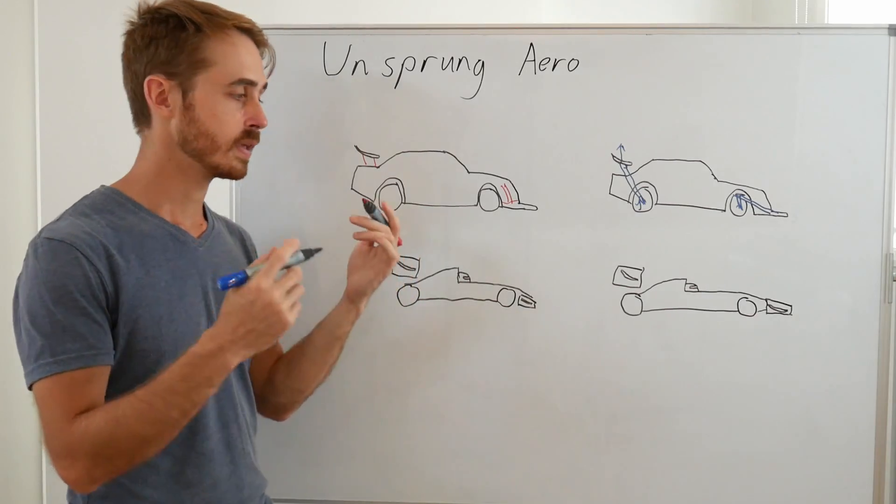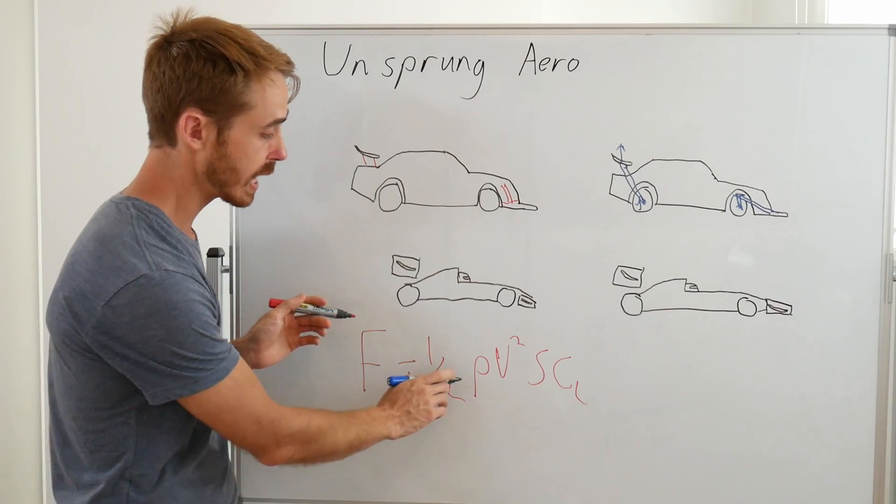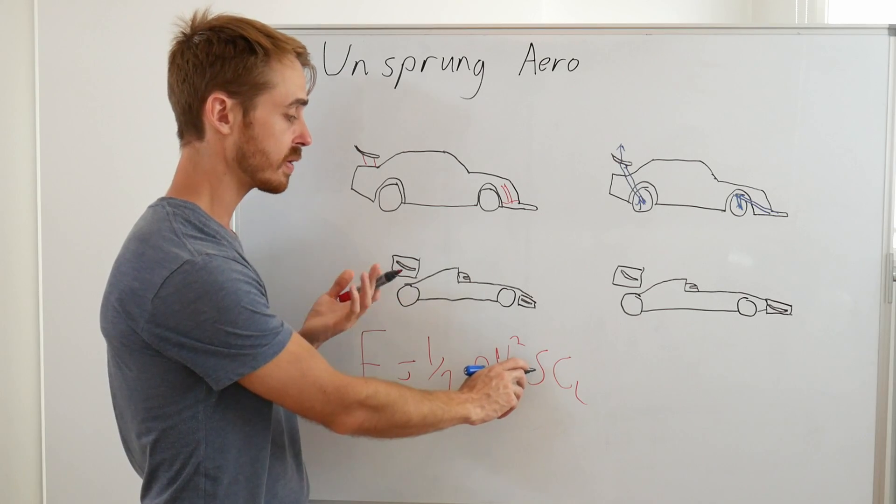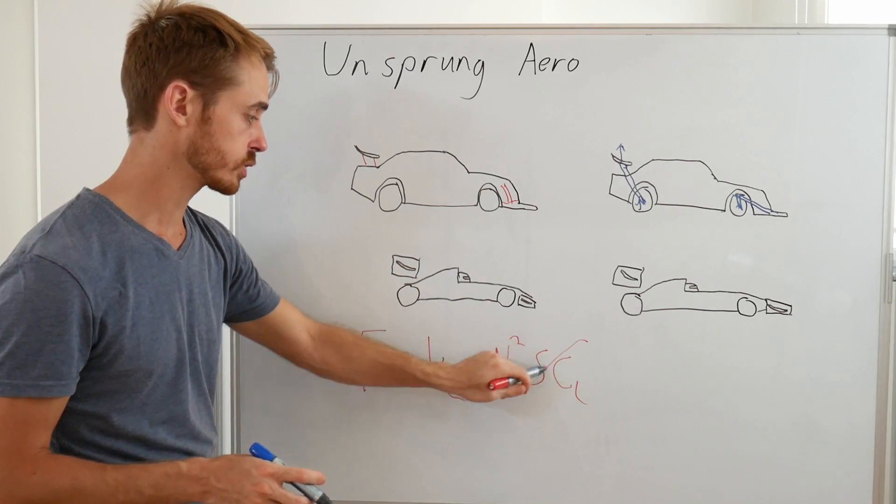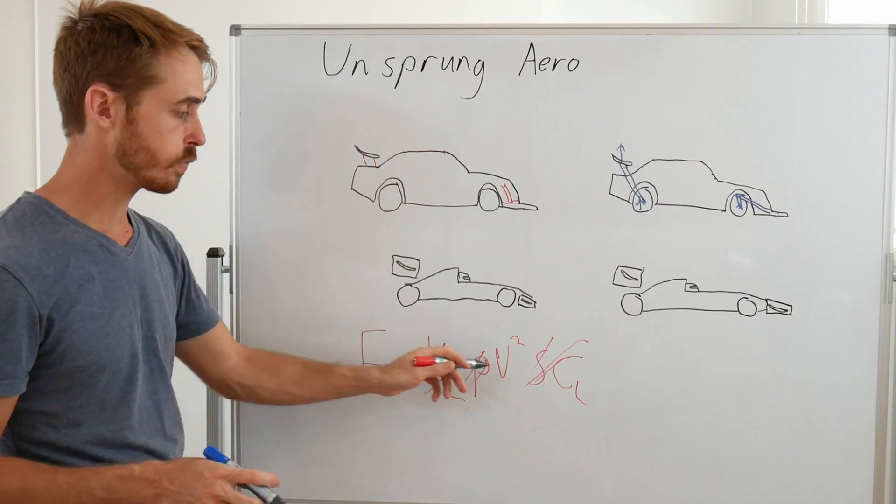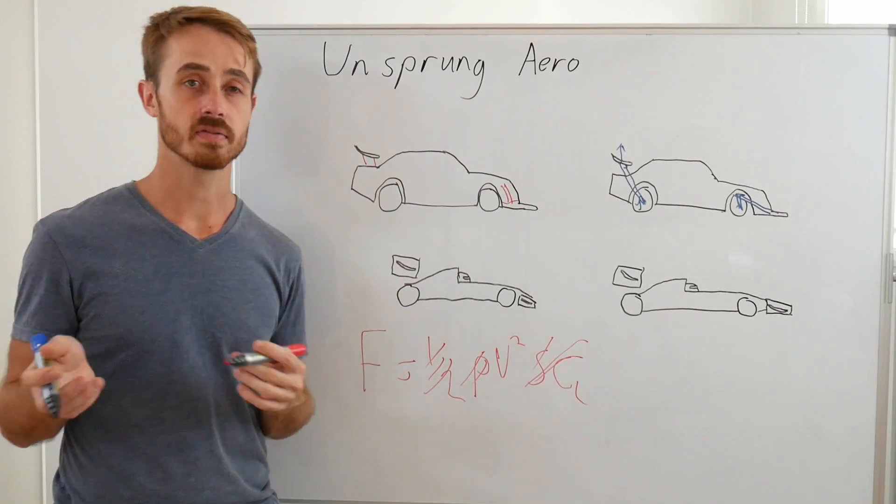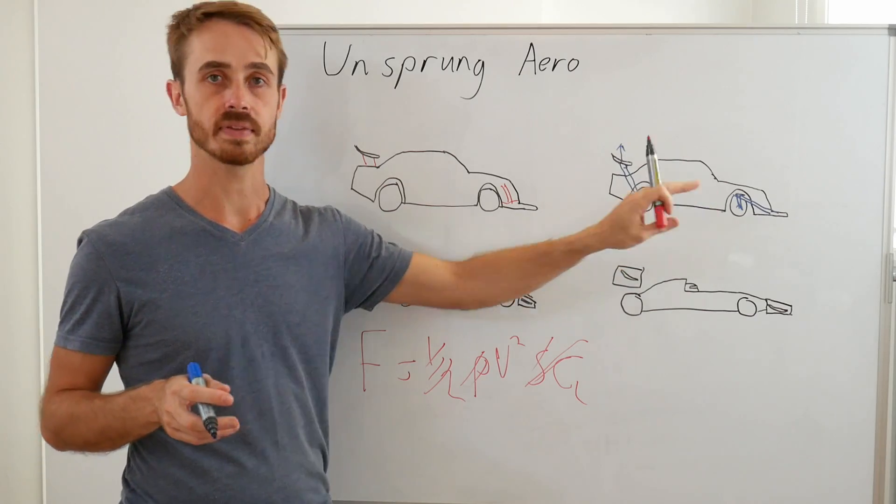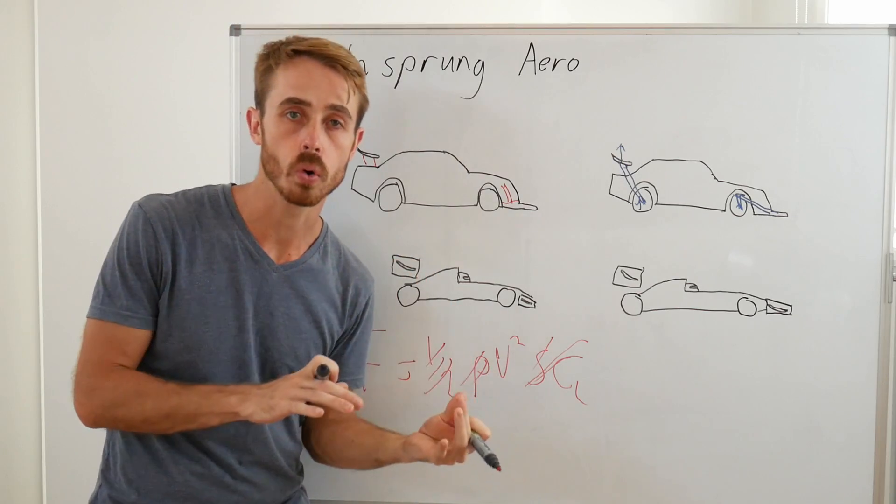If we consider the equation for downforce, we can see that force equals a half of air density times the velocity squared times the area times coefficient of lift. Now this is all constant, so essentially we've got force is proportional to velocity squared. Now this is a little bit of a problem, because when you design your springing rates and stuff like that on your car, you set up your springs for a given basic force.